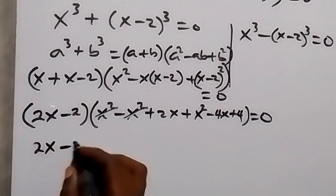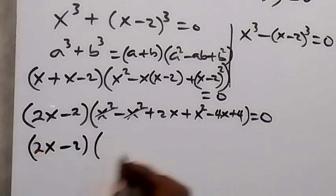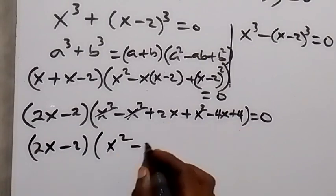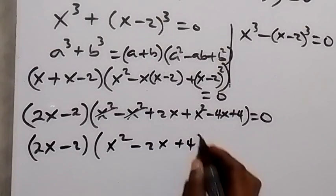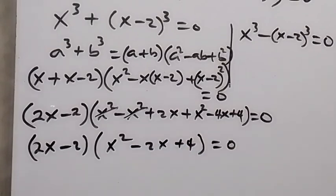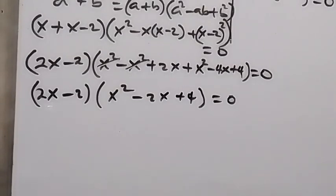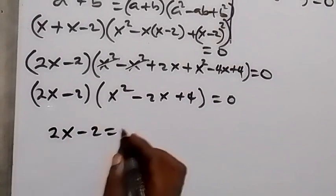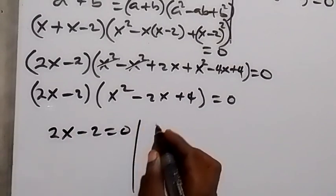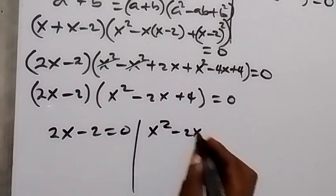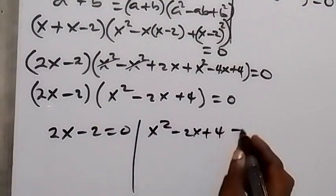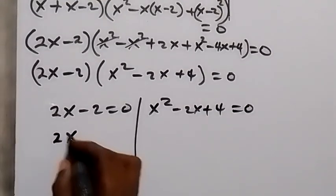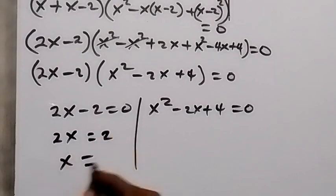We are left with 2x minus 2 multiplied by x squared, then 2x minus 4x gives minus 2x, then plus 4, equals to 0. So we have two possible cases: 2x minus 2 equals to 0, and also x squared minus 2x plus 4 equals to 0. From the first sub-case, 2x equals 2, so x equals to 1.